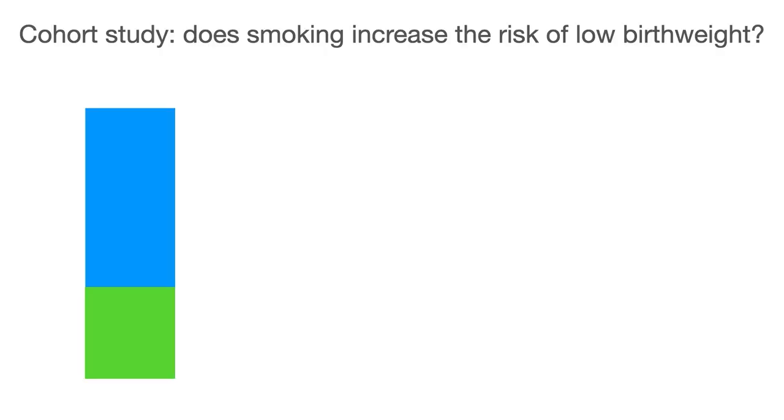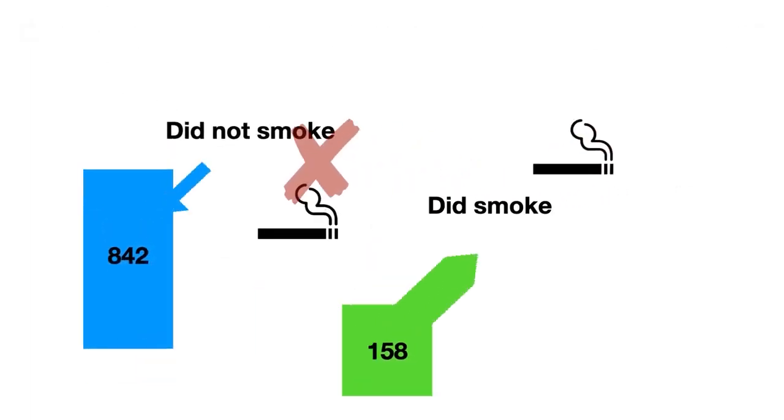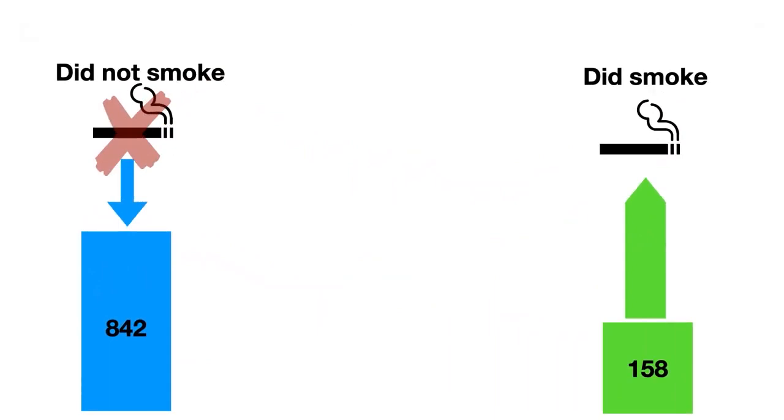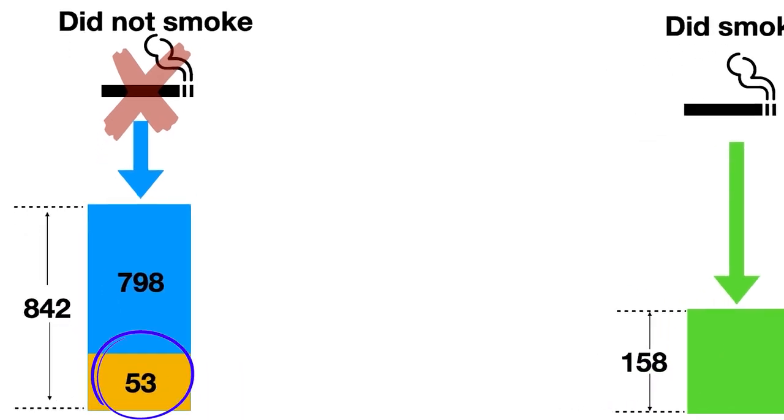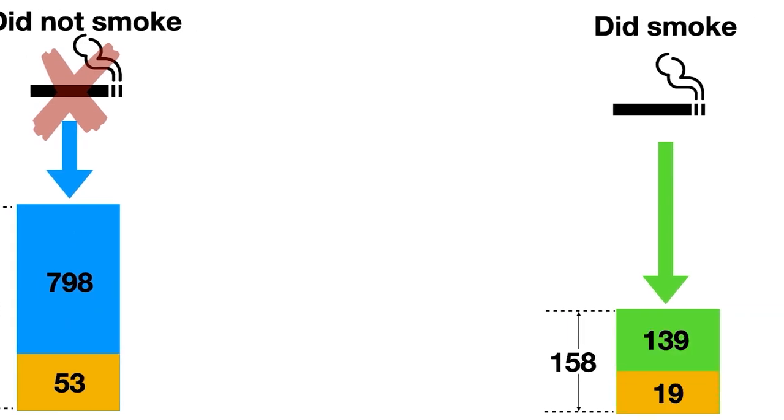In this study, we followed up a thousand pregnant women, and of the thousand, we had 158 who smoked during pregnancy and 842 who didn't smoke, who were non-smokers. So let's consider the risk in each of these two groups separately. In the group of non-smokers, 53 babies were low birth weight and 798 were of normal weight. And in the group of smokers, 19 babies were of low birth weight and 139 were normal weight.